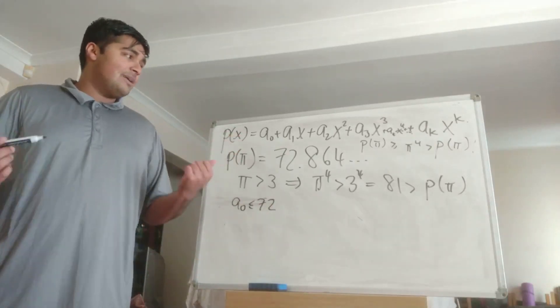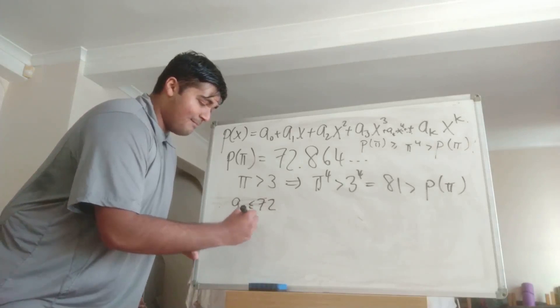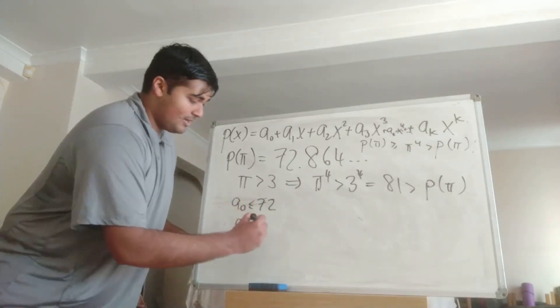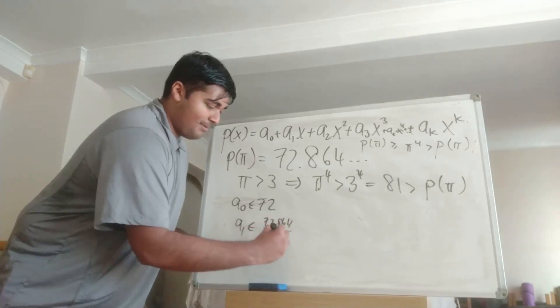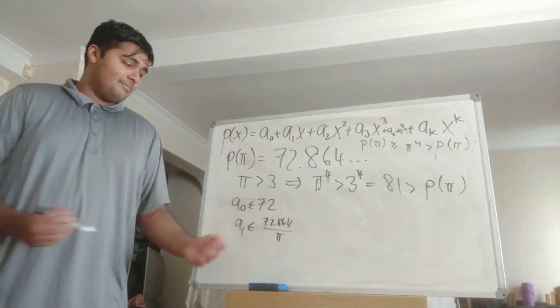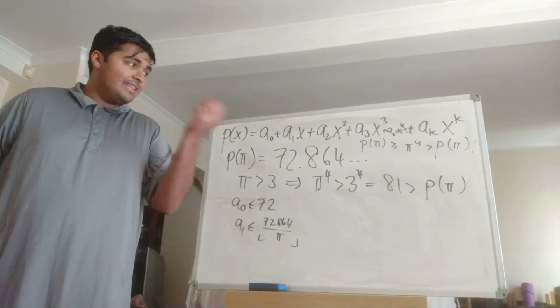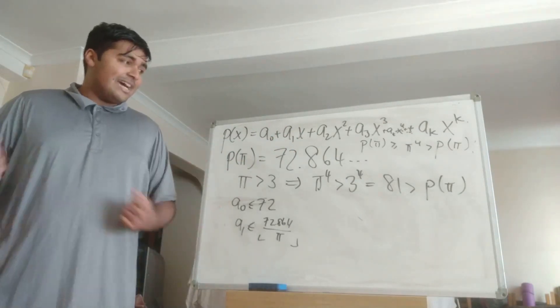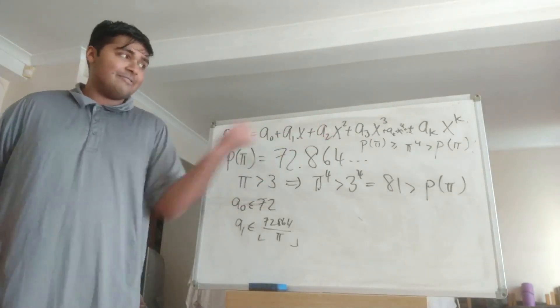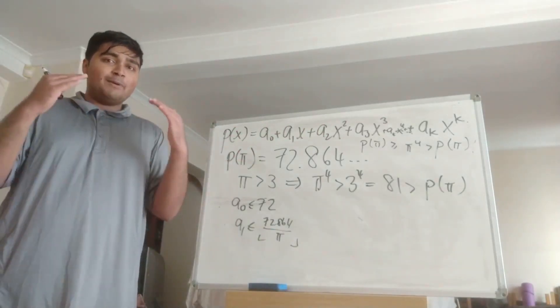We can do a similar thing for a_1 and notice that a_1 then must be at most 72.864 divided by pi, so whatever that is and then perhaps take the floor of that as well because if it was bigger then when we plug in pi this guy here would be bigger than 72.864 and we'd have another contradiction, and similarly for a_2 we can bound it above and similarly for a_3 we can bound it above.